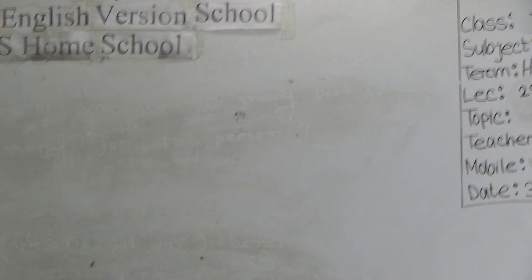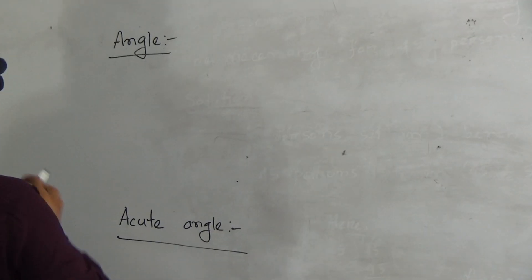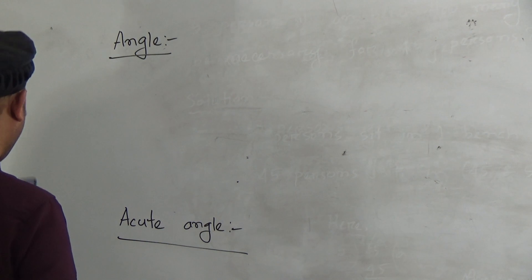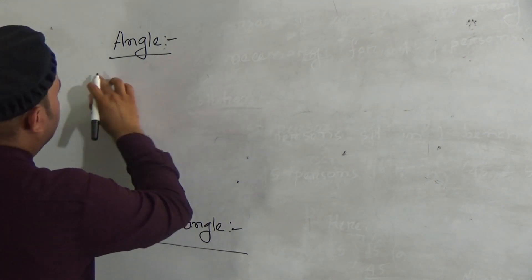Our today's lecture is 28 in part 1 geometry class. We will learn two topics which are angle and acute angle. First of all, you have to write the definition of angle.